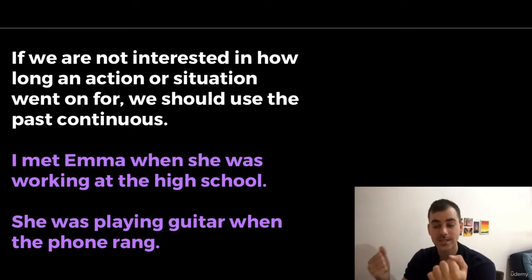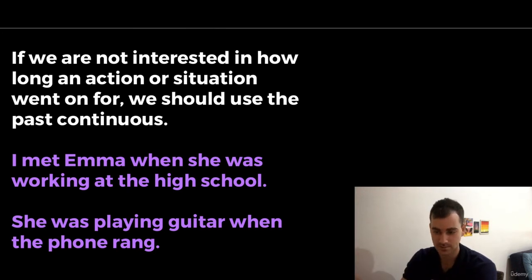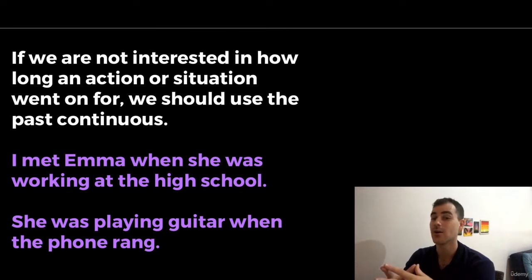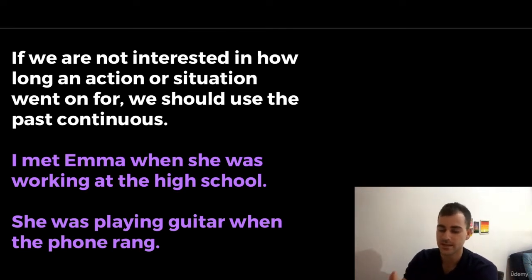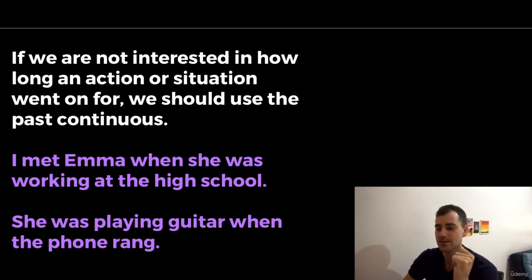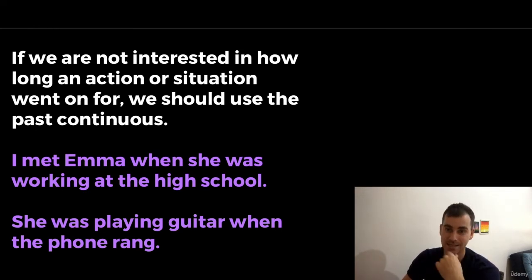If we are not interested in how long an action or situation went on for, we should use the past continuous. This means that we don't care how long the action had happened. I met Emma when she was working at the high school — it doesn't matter how long she had been working there. She was playing guitar when the phone rang — we don't really care how long she had been playing guitar, so we just use past continuous.